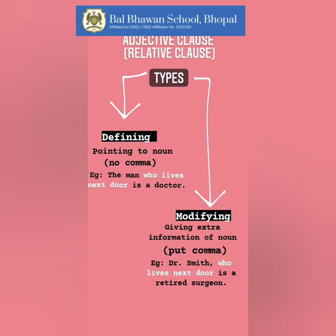Whereas the modifying adjective clause — modify means to change — gives us extra information about the noun. Therefore it contains commas. For example: 'Dr. Smith, who lives next door, is a retired surgeon.' Here the adjective clause 'who lives next door' is giving us some more information about Dr. Smith. 'Who lives next door, is a retired surgeon' is the extra information about Dr. Smith.